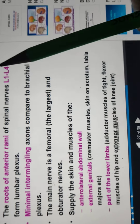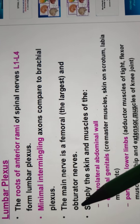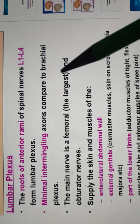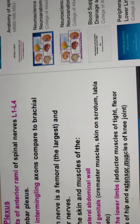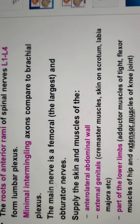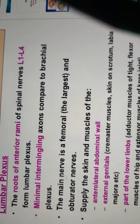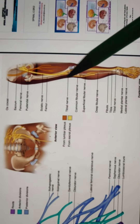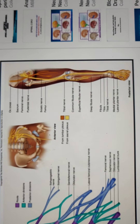The lumbar plexus is formed from L1 to L4. The main nerves here are the femoral nerve, which is the largest nerve of the lumbar plexus, and the obturator nerve. They act as sensory and motor nerves supplying to the skin and muscles of the anterior and lateral abdominal wall, external genitals, and parts of the lower limbs.